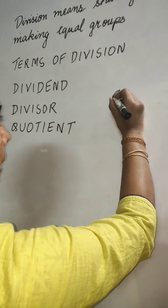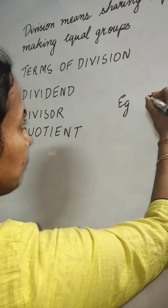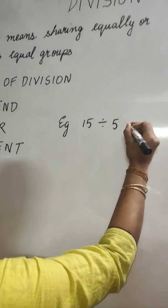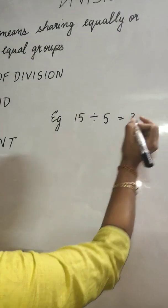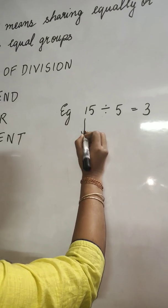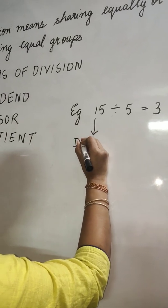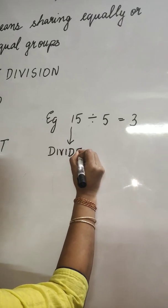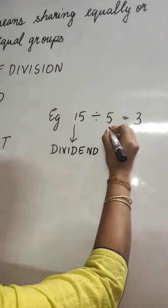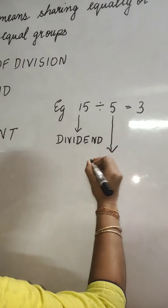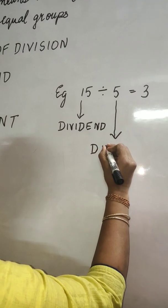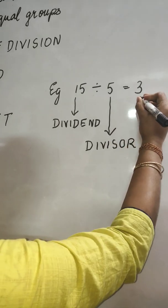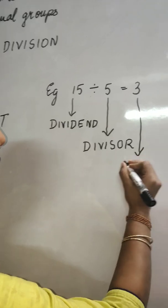Let me give a simple example. 15 divided by 5, we will get 3. So 15 is the dividend, 5 is the divisor, and 3 is the quotient.